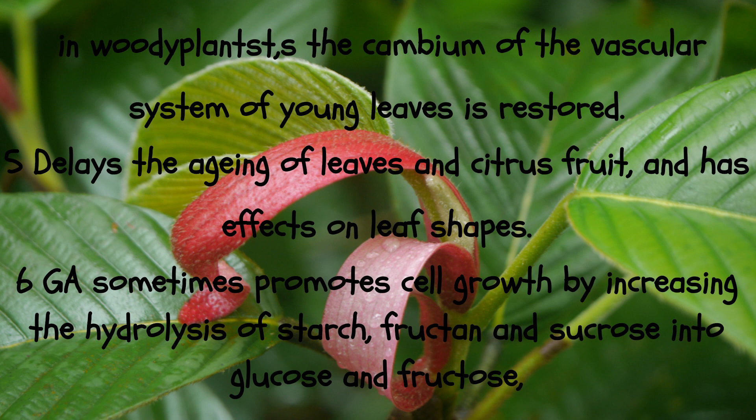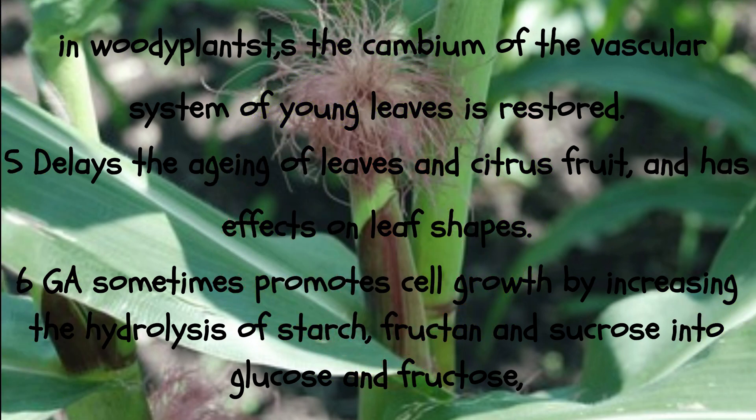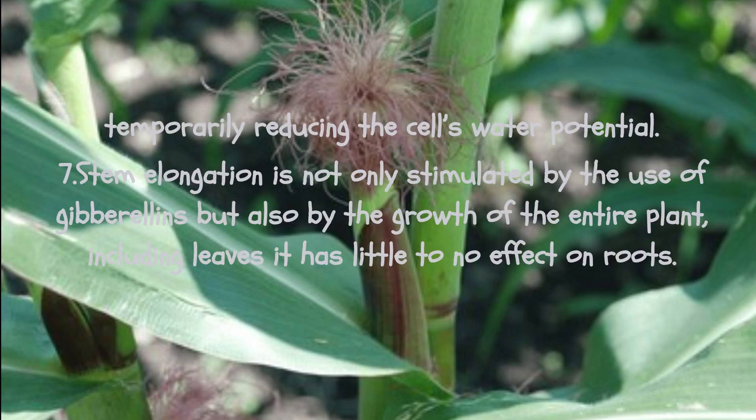GA sometimes promotes cell growth by increasing the hydrolysis of starch, fructan, and sucrose into glucose and fructose, temporarily reducing the cell's water potential. Stem elongation is not only stimulated by gibberellins but also promotes growth of the entire plant including leaves, while having little to no effect on roots.